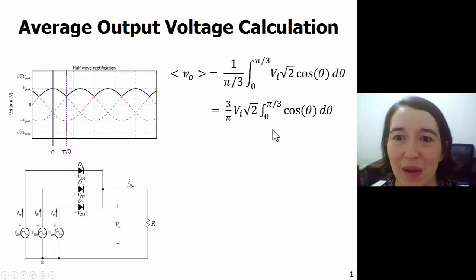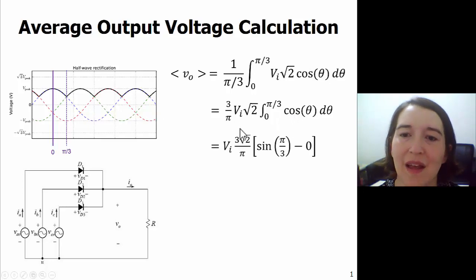Integrate the cosine. Cosine becomes sine. And we evaluate that at pi over three minus sine of zero, which is just zero. So we will get this expression.